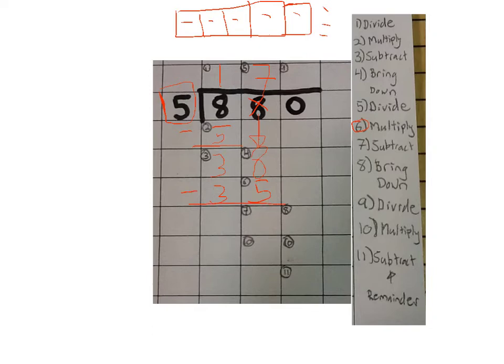Step number 7, we're going to subtract. We're going to subtract 38 and 35, which is 3. That was step number 7. It goes in the 7 box.